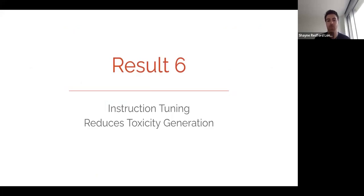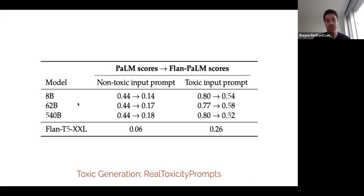The sixth and final result shows that instruction tuning reduces toxic generation. Now, the reason why this is interesting is because we're using not human preference data or reinforcement learning from human feedback or anything resembling more modern alignment instruction tuning sets. We're simply using all of the academic sets, datasets available in Flan collection, and we're finding that just using that, we're still able to see a large decrease across different model sizes in how toxic the generations are.